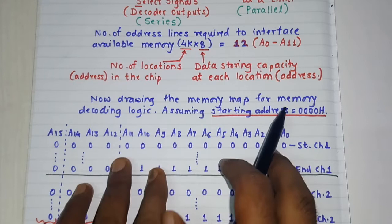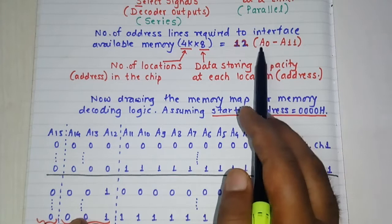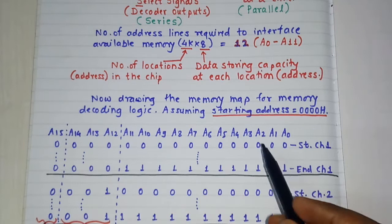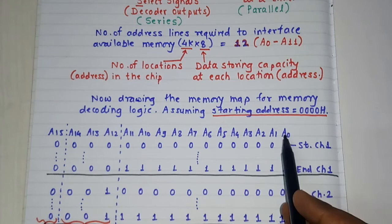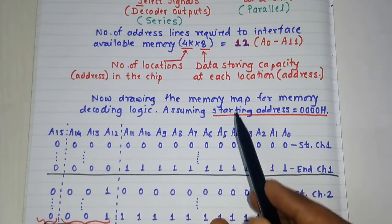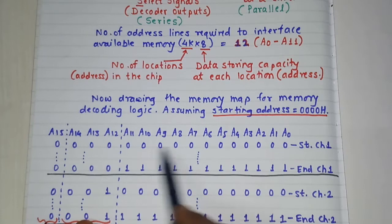Now we have to find out the decoding logic to interface the memory. We have to directly connect these lines to memory ICs. But as we know that the 8085 microprocessor has multiplexed AD0 to AD7 lines, so A0 to A7 are not separate lines — these lines are multiplexed with the data lines. So we have to use a latch IC to separate out the address and data. In this problem they have mentioned to assume a suitable address, so for simplicity we are assuming starting address is equal to 0000H.